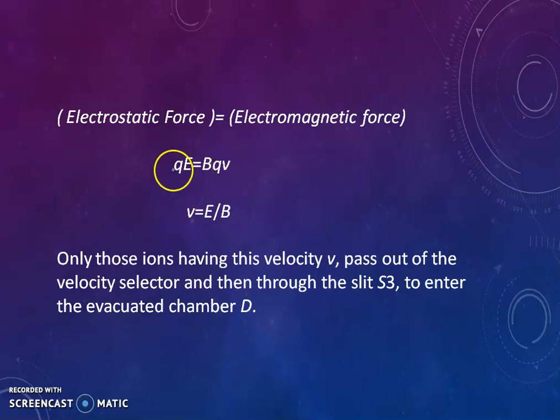Here Q and Q get cancelled, so we will get V is equal to E by B. So only those ions having velocity V pass out of the velocity selector and then through the slit S3 and enter inside the evacuated chamber D. So only mono velocity ions are selected. Mono velocity means the ions which are having the same velocity V equal to E upon B. All other ions get rejected. So this is the specialty of Bainbridge mass spectrograph.